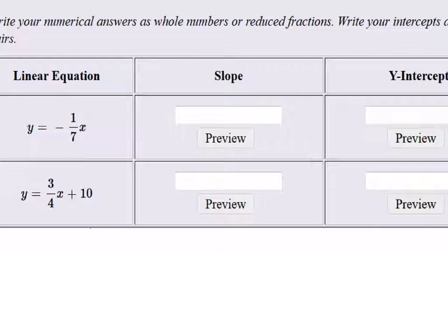So y equals negative 1/7 x. What is the slope? Negative 1/7, the coefficient of x. Very good.